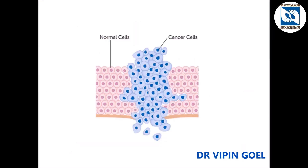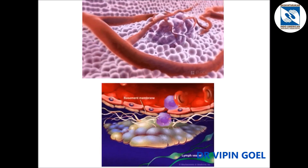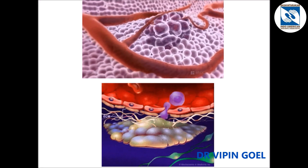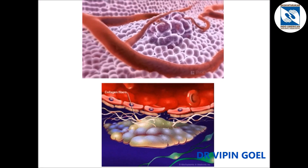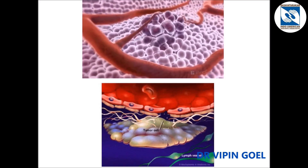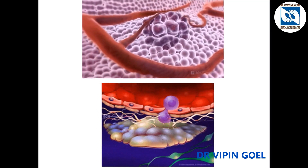So cancer is uncontrolled division of these bad cells. These bad cells go on multiplying and after some time get separated and spread to other parts of the body, causing metastasis. Here you can see the cancer cells are continuously multiplying and after some time getting separated from the primary site, going into the blood vessels and the lymph nodes, and spreading to other parts of the body.